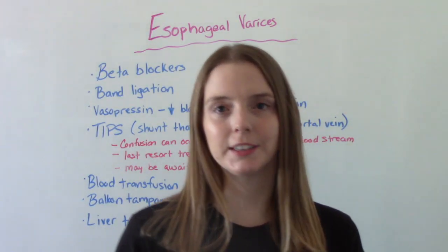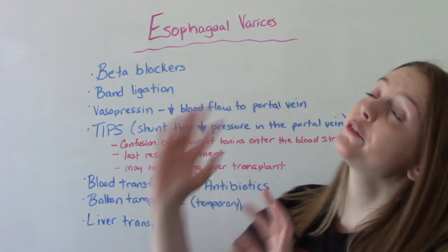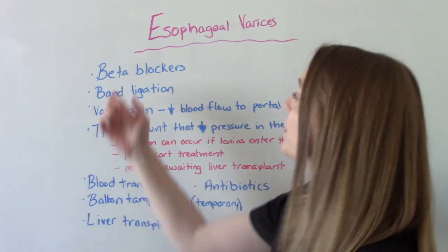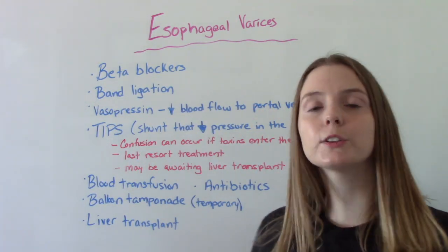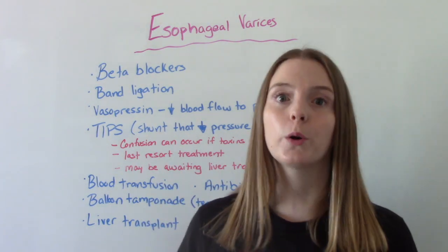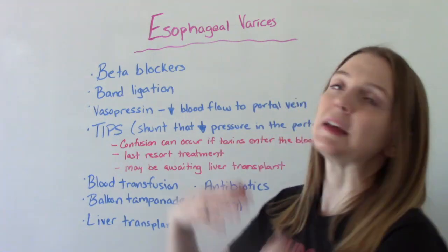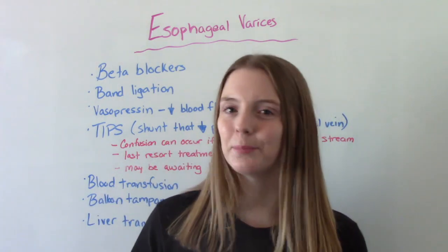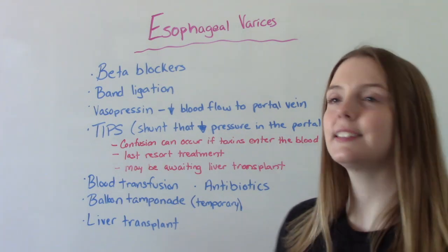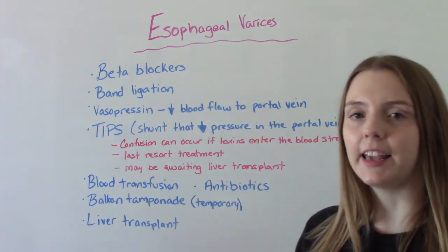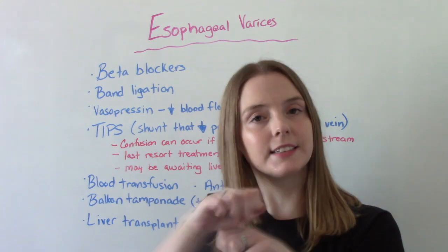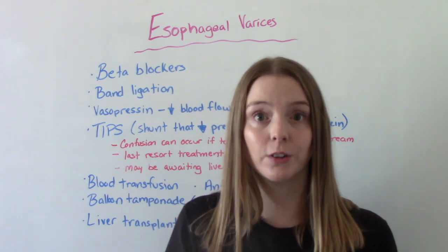Now let's talk about treatment. To prevent bleeding before a bleeding episode occurs, they might prescribe beta blockers, which help reduce blood pressure and therefore reduce pressure in the portal vein. If you're already having a bleeding episode, other treatments are used. A common one is band ligation, where little elastic bands are used to tie off the varices to prevent or stop the bleeding.